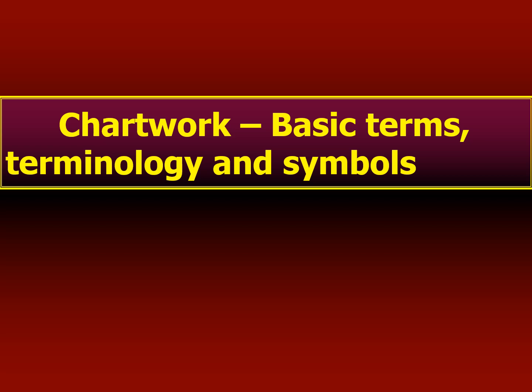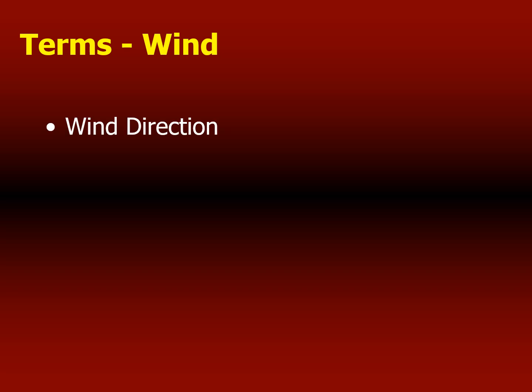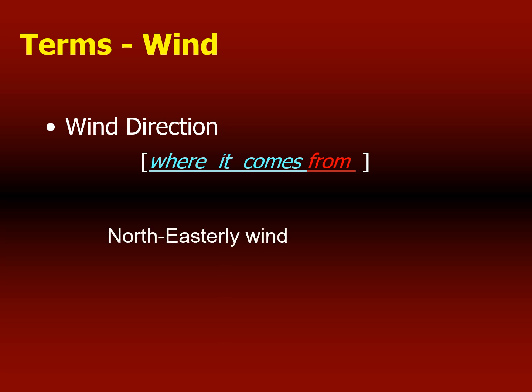Today we'll be talking about basic terms, terminology, and symbols regarding chart work. The first one deals with wind. Wind direction is normally denoted from the direction where it comes from. So when we draw the symbol, for example if the wind is coming from a northeasterly direction, the straight line starting from the dot point will be pointing towards the direction of the wind. The lines on the side determine the strength of the wind.